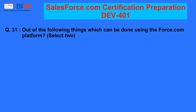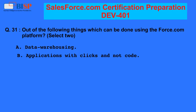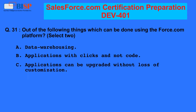Question 31: Out of the following things, which can be done using the Force.com platform? A. Data warehousing. B. Applications with clicks and not code. C. Applications can be upgraded without loss of customization. D. Code version control system.